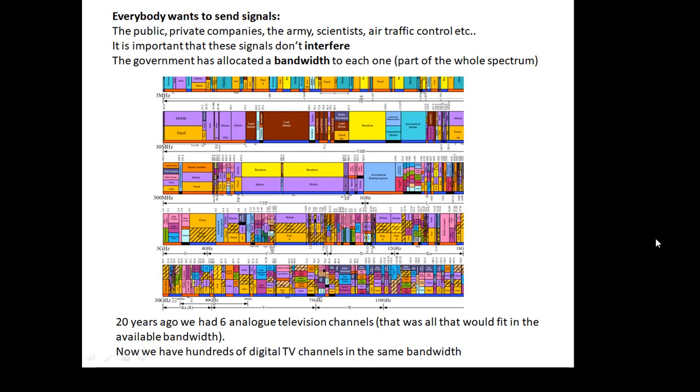For example, mobile phones are allowed a certain bandwidth. Air traffic control is in a certain bandwidth that nobody else is allowed to use. The army has its own bandwidth. Amateur radio has its own bandwidth. Now, with a digital signal in the same bandwidth, you can get a lot more signals. Twenty years ago, we had six analog television channels - that was all that could fit in that bandwidth. Now we have hundreds of digital TV channels, all of them fantastic quality entertainment, which uses the same amount of bandwidth.